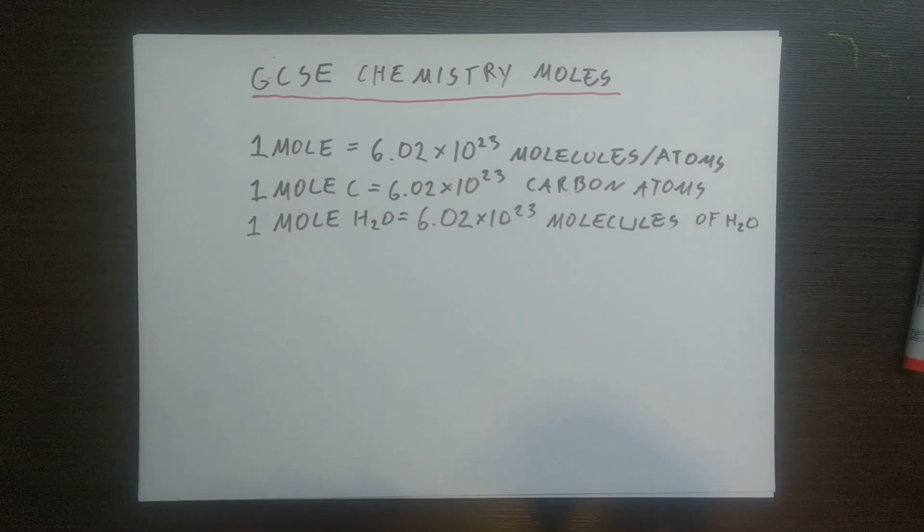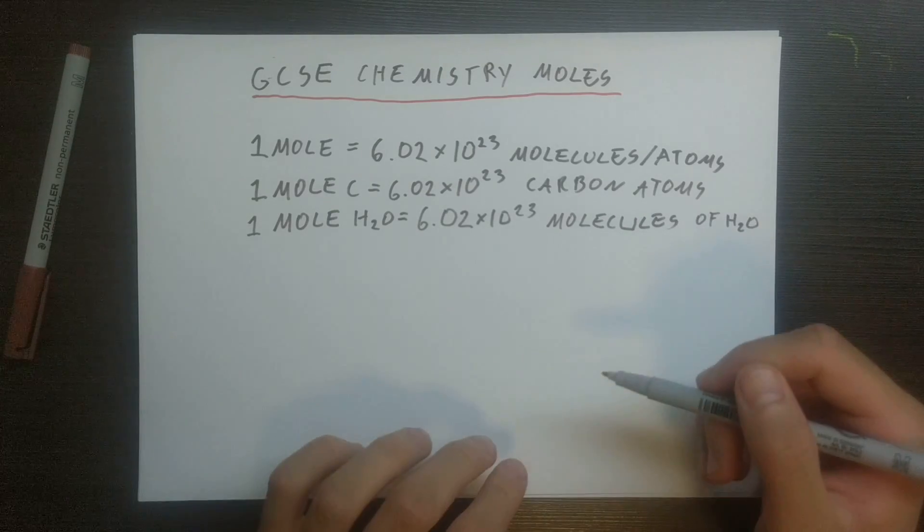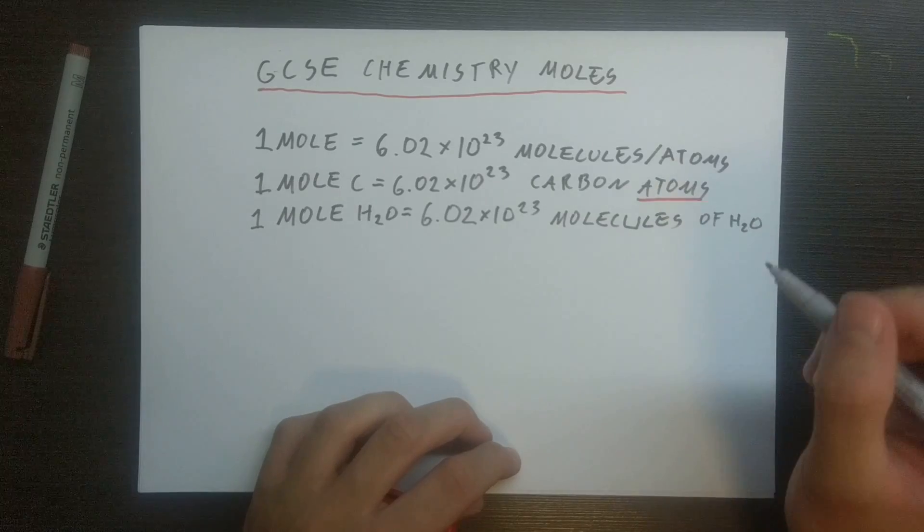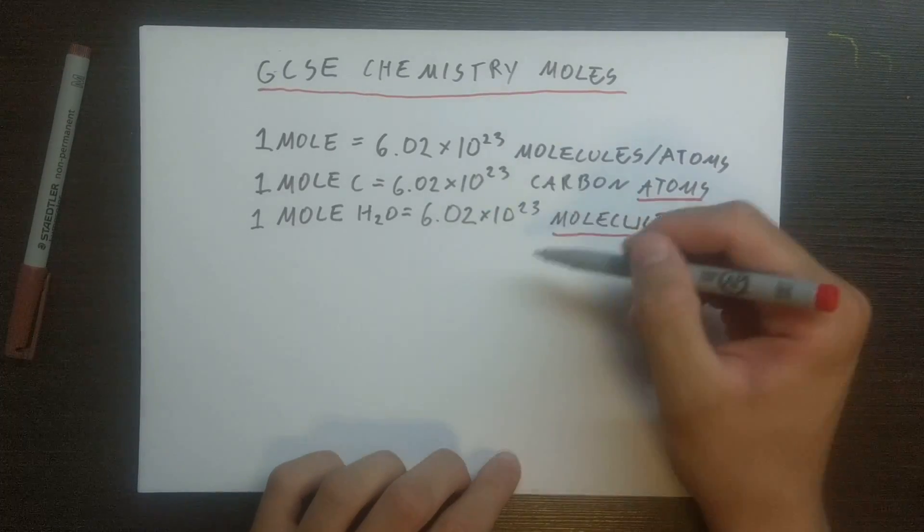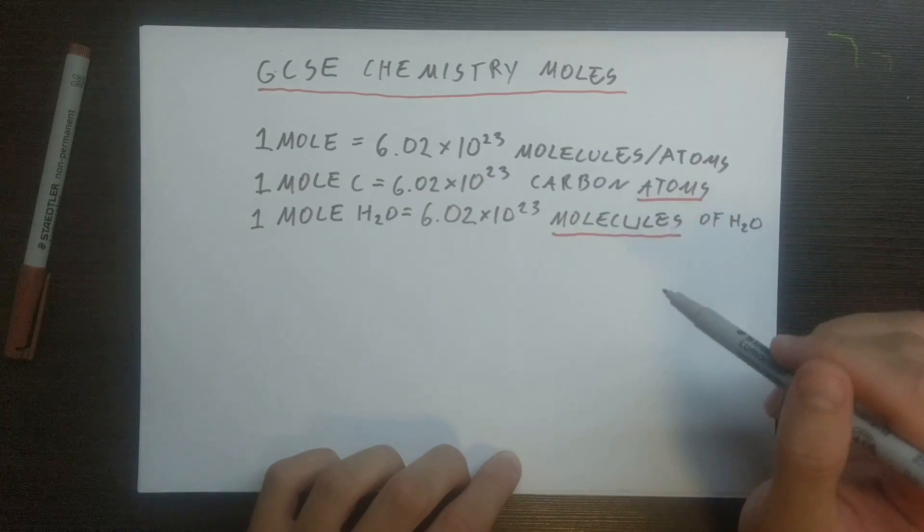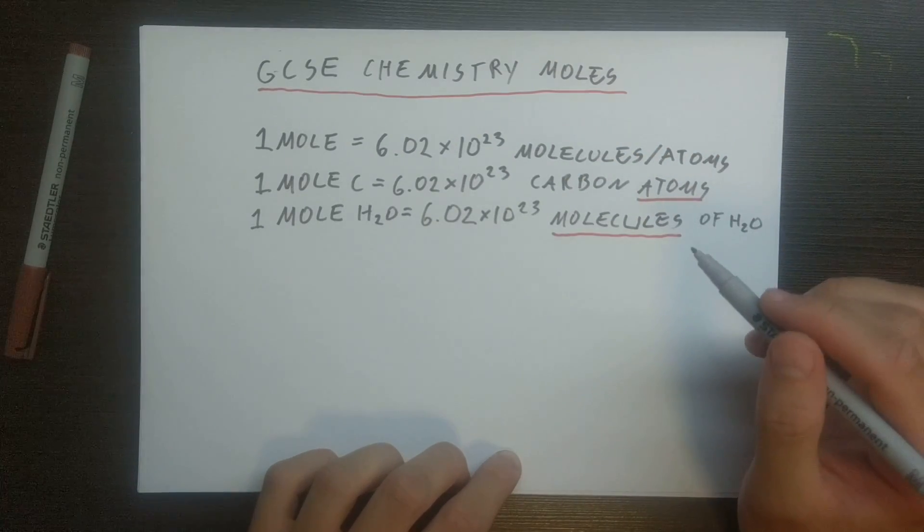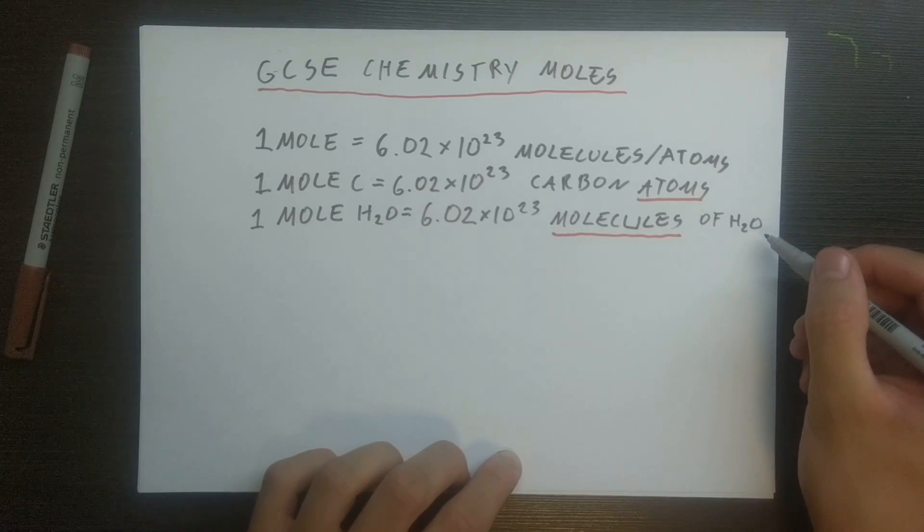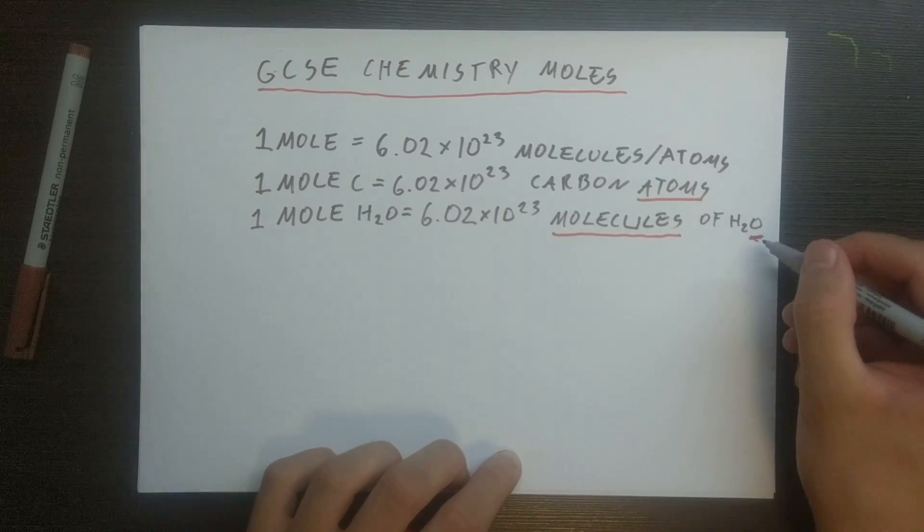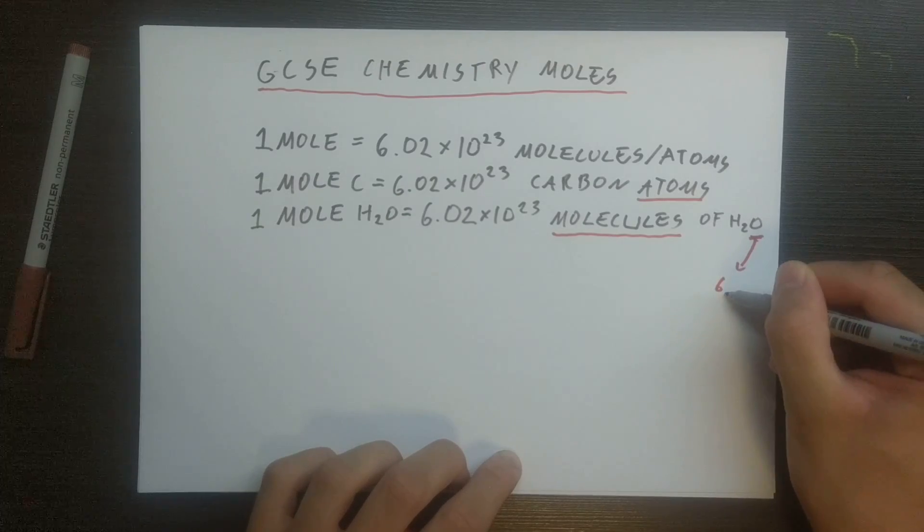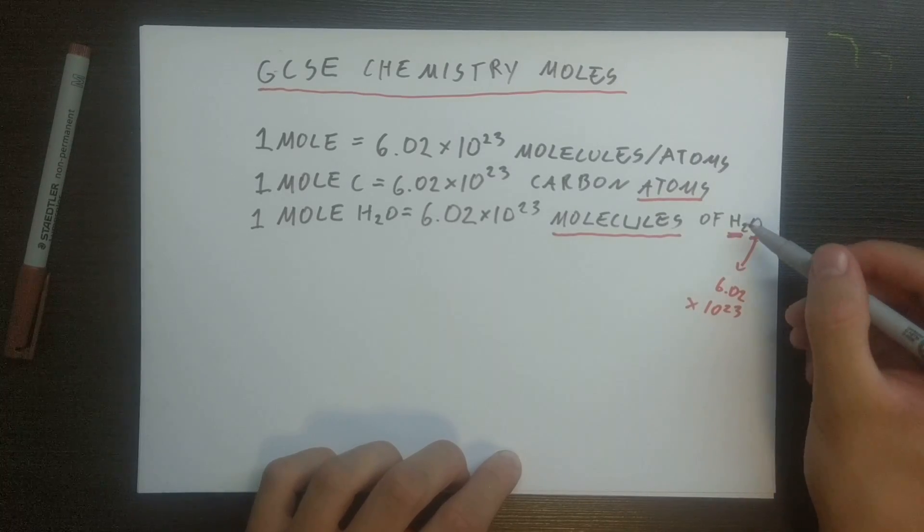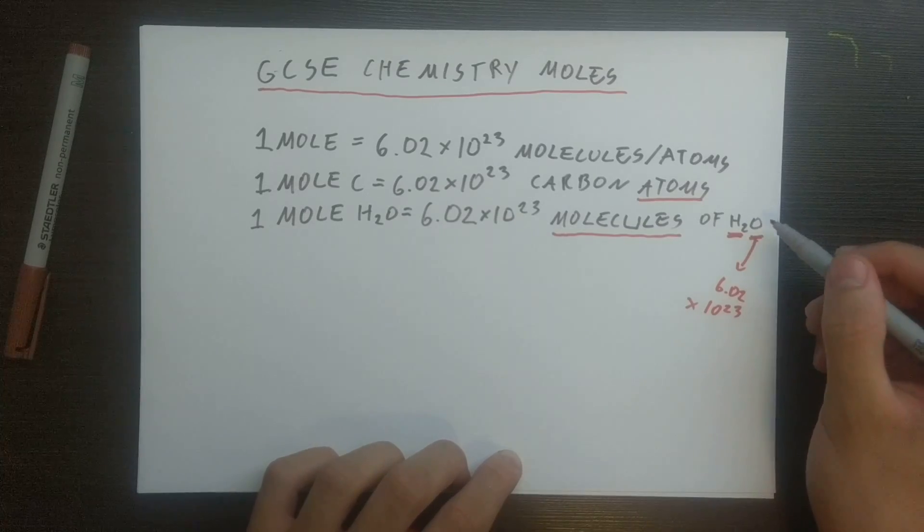So the important thing here is that moles can be interpreted in the context of the amount of atoms or the amount of molecules. We can have this many molecules of water or this many carbon atoms. Now, likewise, within that water molecule we have this many oxygen atoms - 6.02 times 10 to 23. However, as you can see, we have two hydrogens, we have two moles of hydrogen per one mole of oxygen.